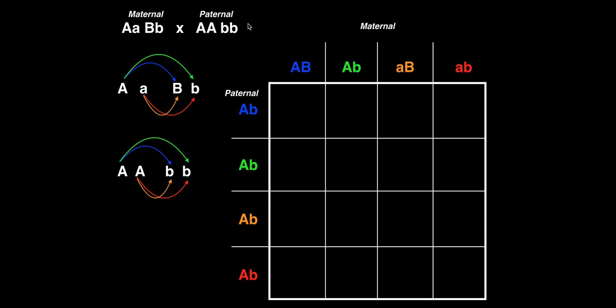We have to account for every possible combination of fertilization to get all the possible genotypes. I've got the maternal genotype at the top, considering both her A genes and B genes. In this example, A is going to be the gene for height — either tall or short — and B is going to be the gene for speed — fast or slow. The mother's genotype is big A, little a, big B, little b, and I've color-coded it. We have to make every possible combination of each of these two A's with each of these two B's.